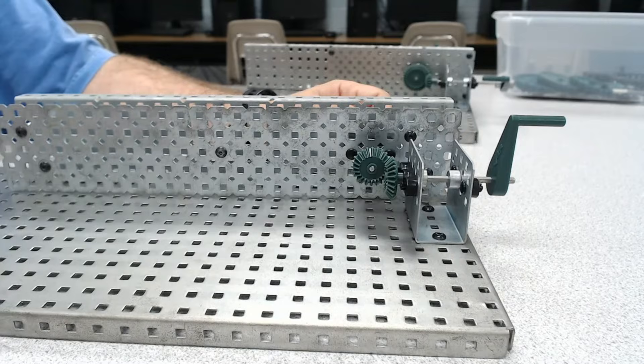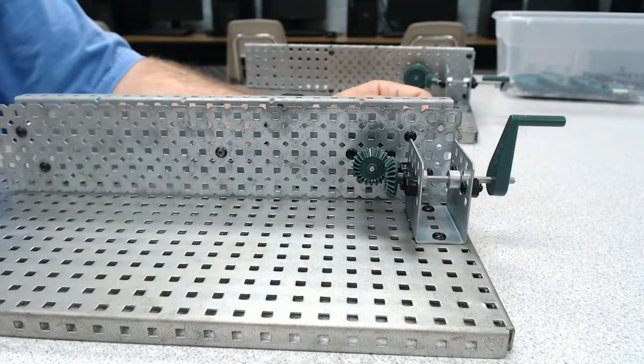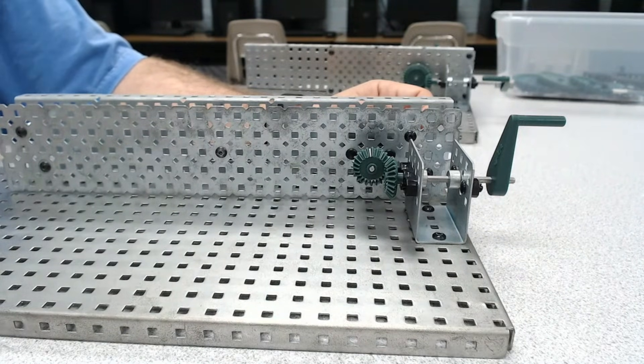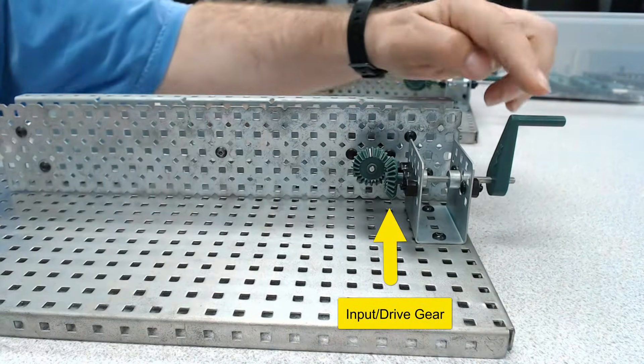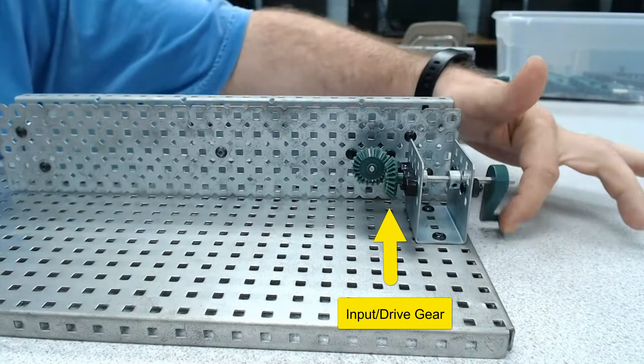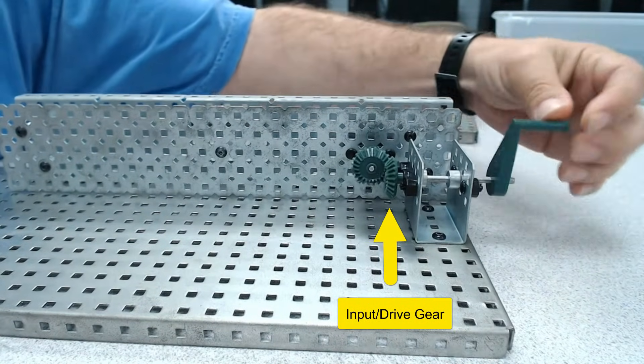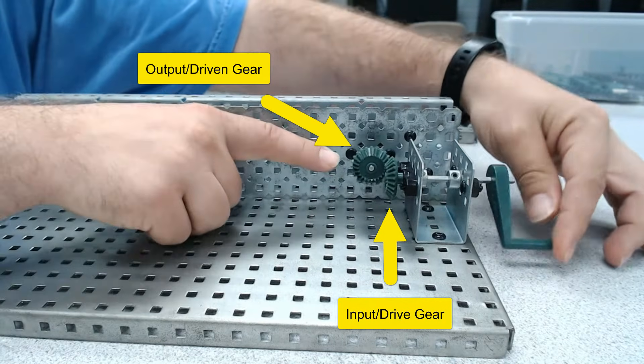Before we do anything else, which of these gears do you feel would be the input and the output? If you said this was the input, you would be correct. The handle is attached to that gear, which means this is where I'm putting power into the system, making this my input and this one my output.